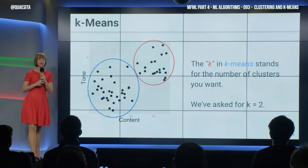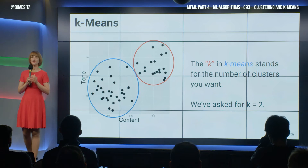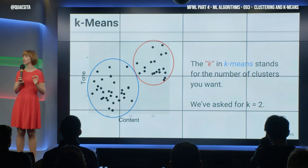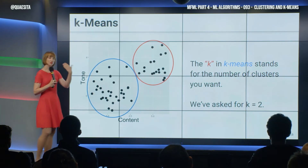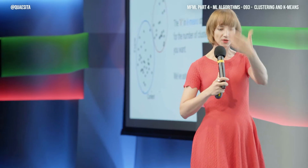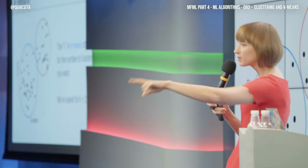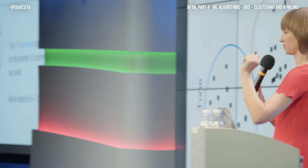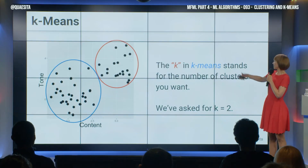The k in k-means stands for the number of clusters that you are requesting — this is up to you. When you are using the algorithm, you are ordering as if from a menu: I would like three clusters, please. Or I would like two clusters, please. That's the k.